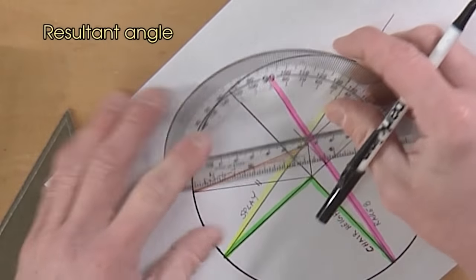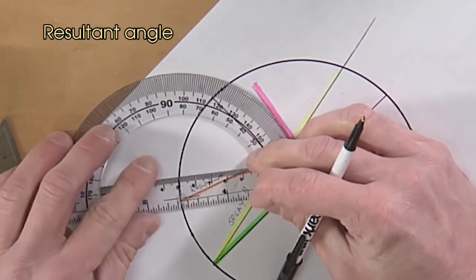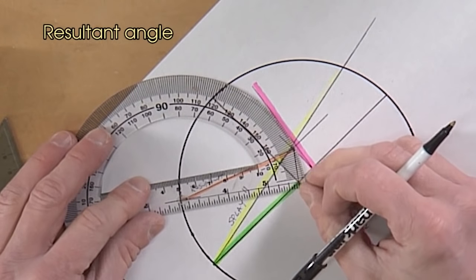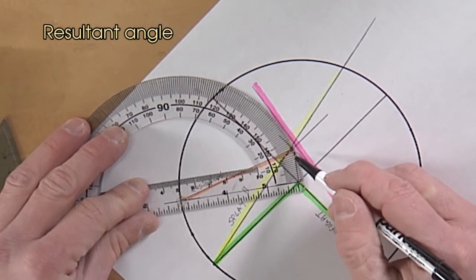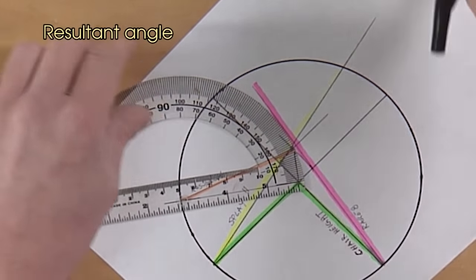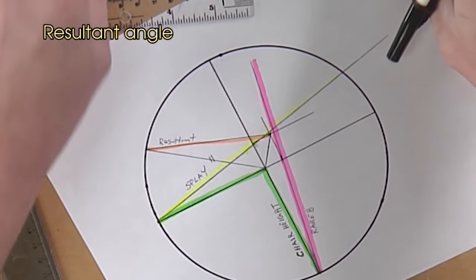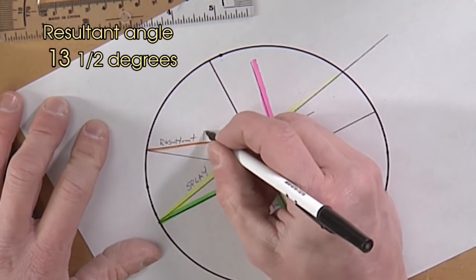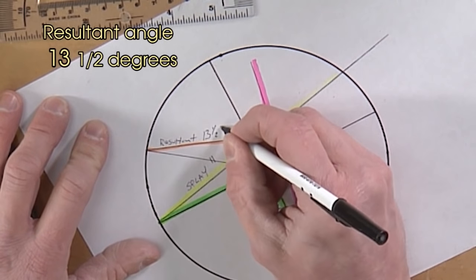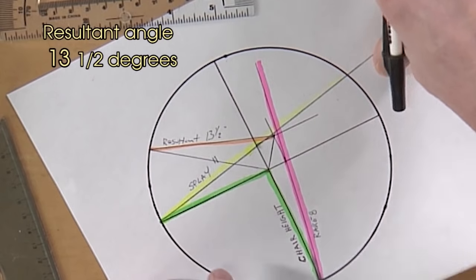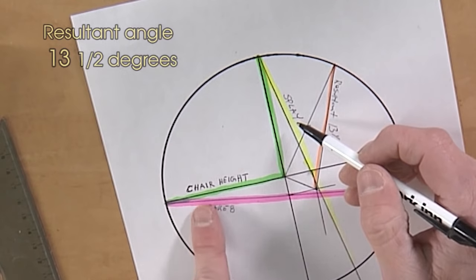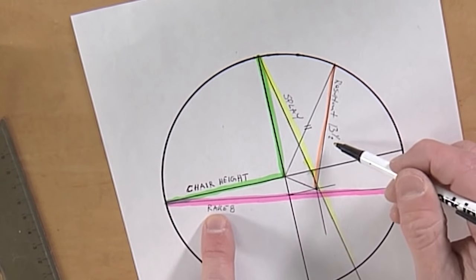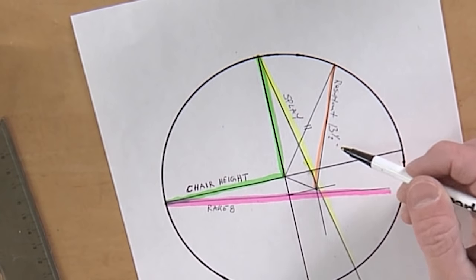And if I put my protractor on there, and this is really where SketchUp is nice because SketchUp is really precise and would tell me spot on. And I had figured it out at 13 and a half degrees. So that resultant angle, remember, is the combination of my splay and my rake gives me the result.